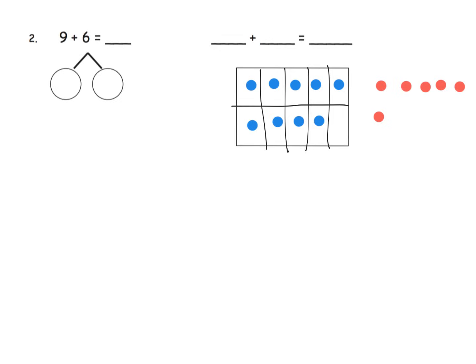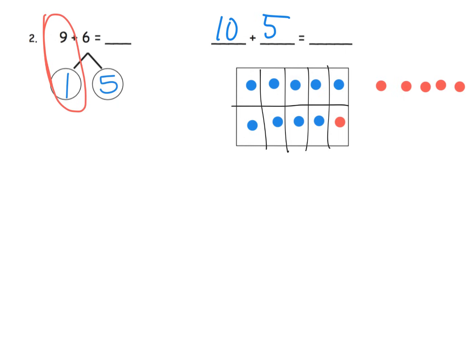What's this number bond business? Well, this number bond is representing the fact that we could take one of these dots and move it over to finish the 10 frame — to fill in the 10 frame. We're taking 1 from the 6, breaking the 6 apart into 1 plus 5, because we want to fill in our 10 frame. We record that in our number bond as 1 plus 5, and then we can say here is our 10. So that's the same thing as 10 plus 5, which is 15.